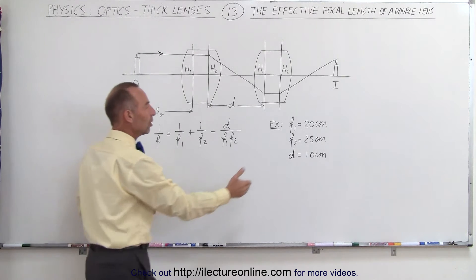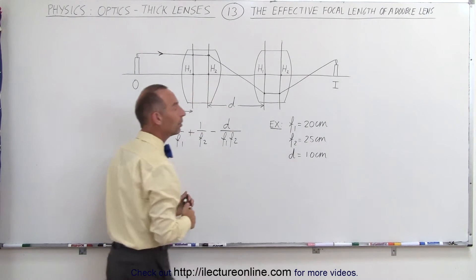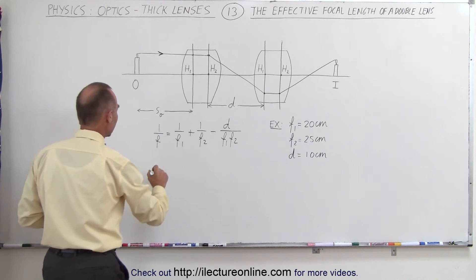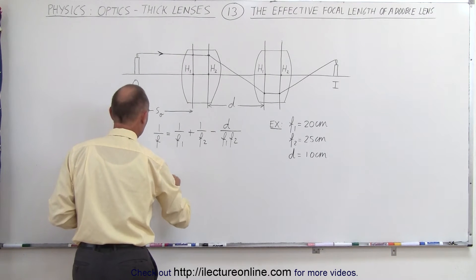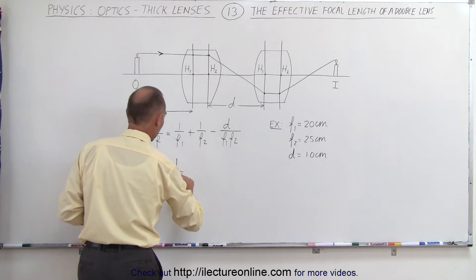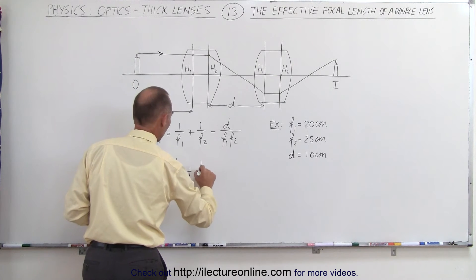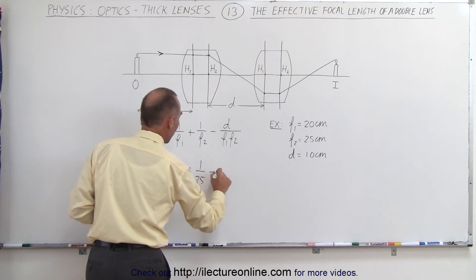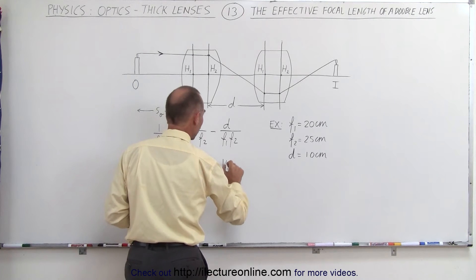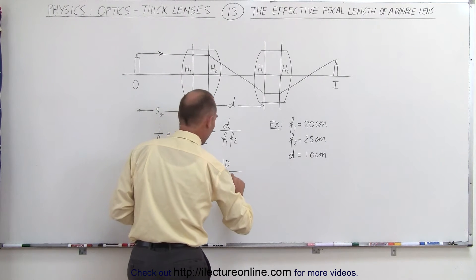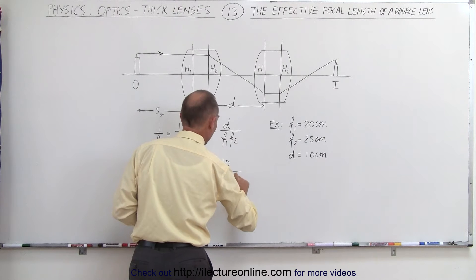Using these numbers right here for a simple example, let's go ahead and see how that works. So here we get 1 over F equals 1 over 20 plus 1 over 25 minus the distance between them which is 10 divided by the product 20 times 25.